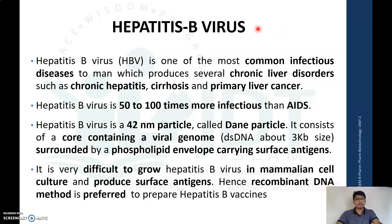Hepatitis B virus, or HBV, is one of the most common infectious diseases in humans, producing several chronic liver disorders such as chronic hepatitis, cirrhosis, and primary liver cancer. HBV is 50 to 100 times more infectious than AIDS, and the virus consists of 42 nanometer particles, also known as Dane particles.